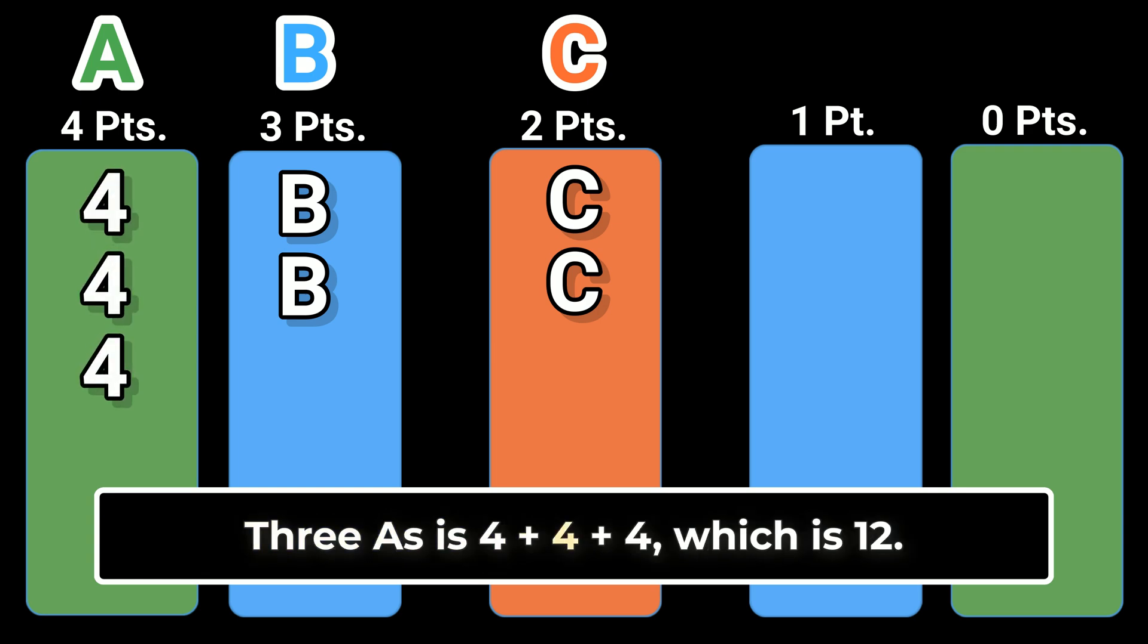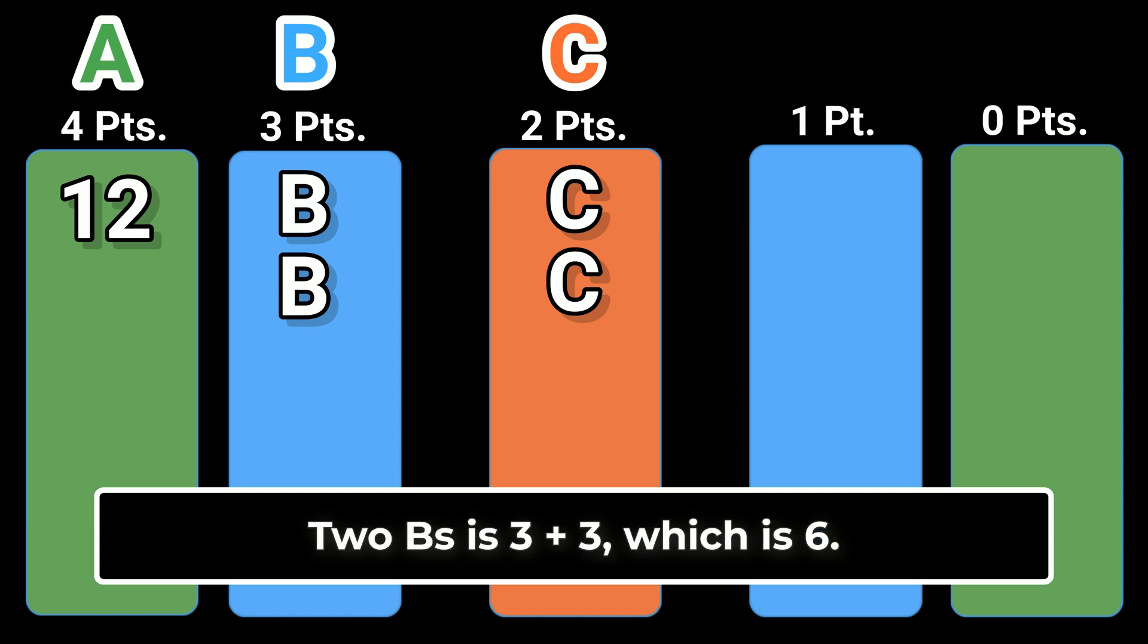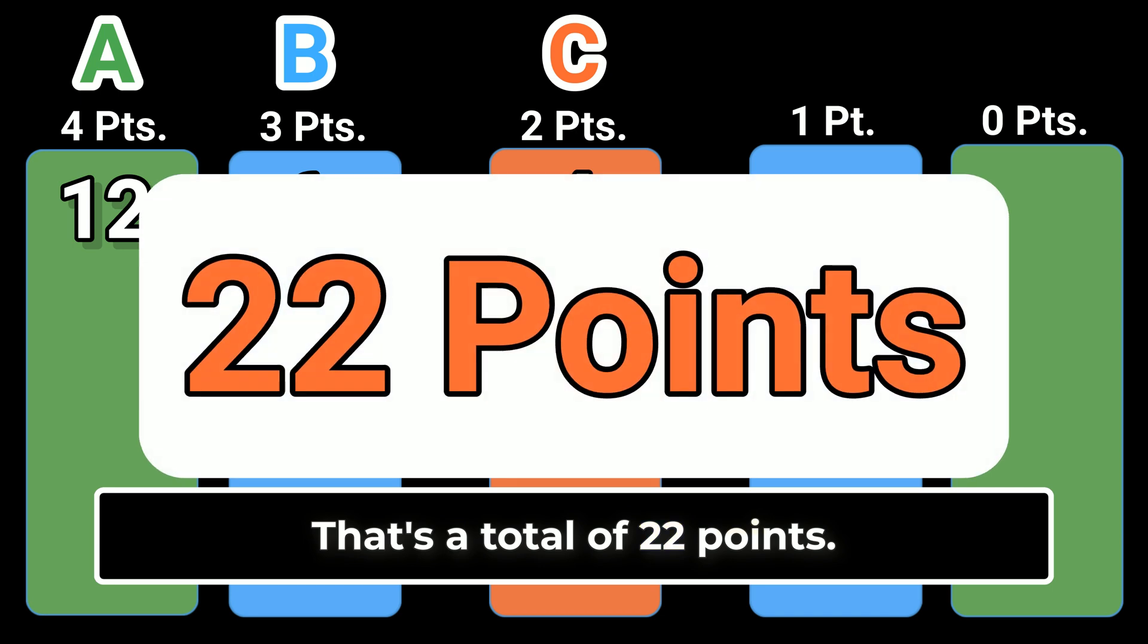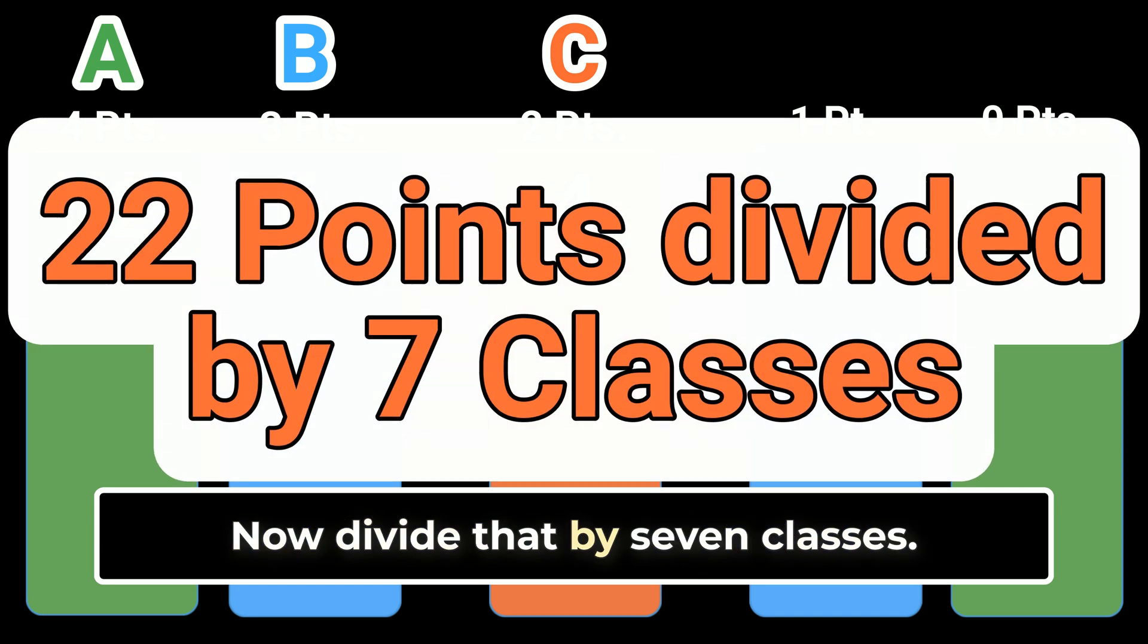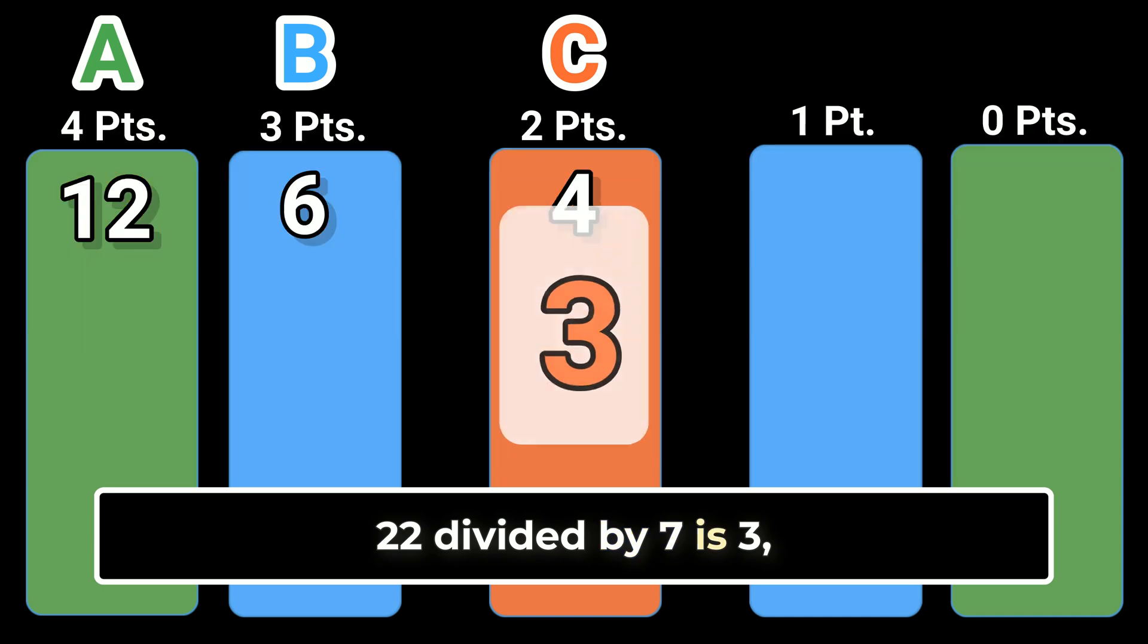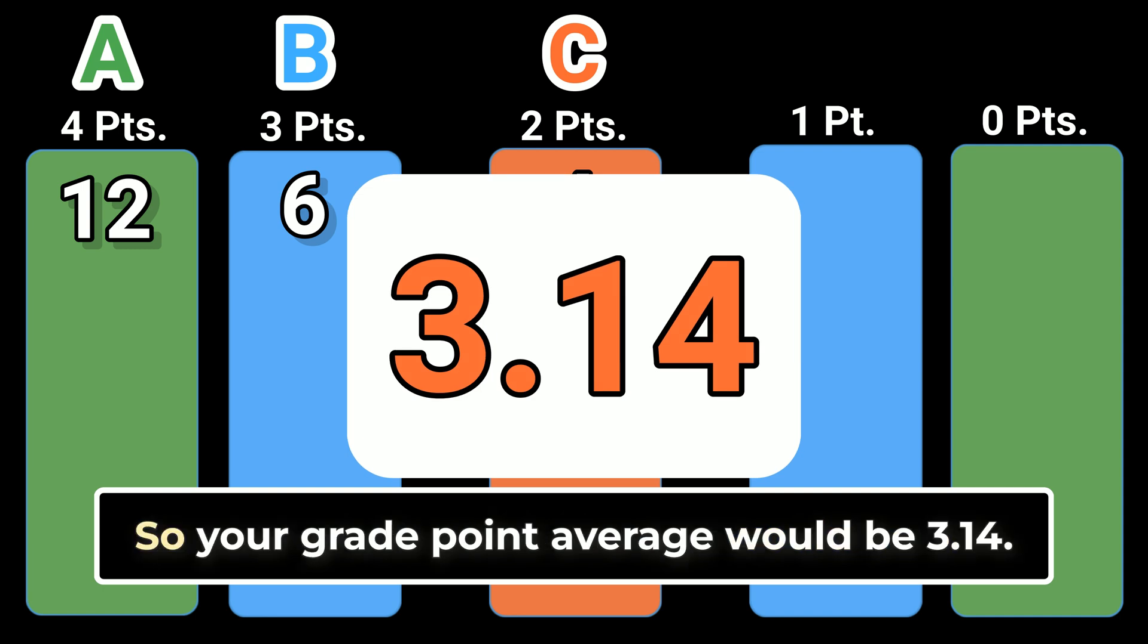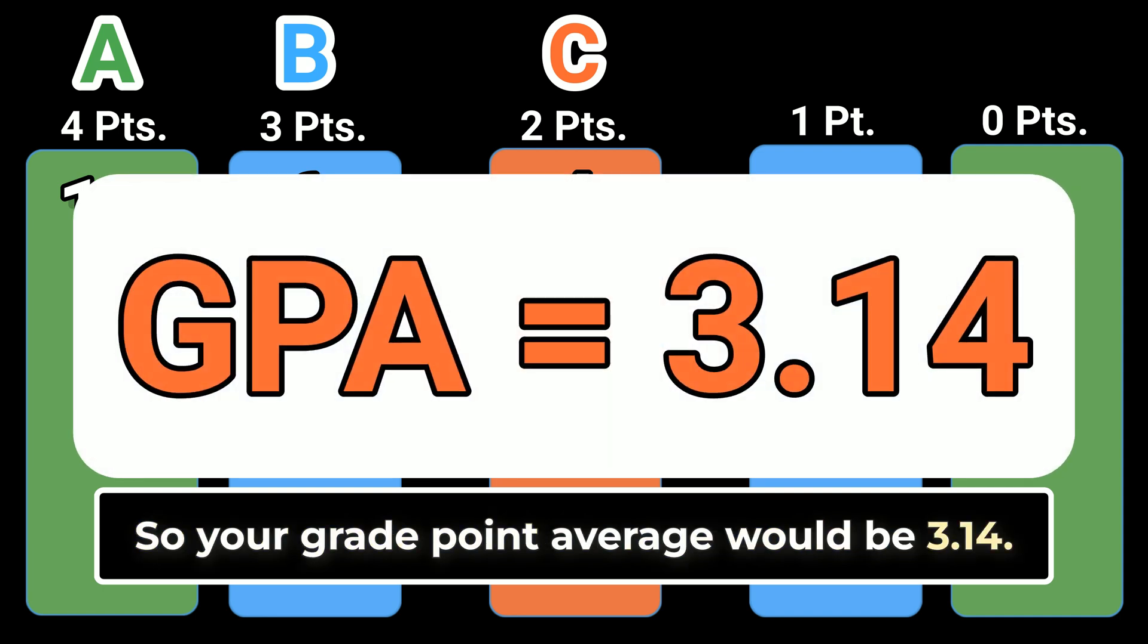Three A's is four plus four plus four, which is 12. Two B's is three plus three, which is six. And two C's is two plus two, which is four. That's a total of 22 points. Now divide that by seven classes. 22 divided by seven is three with a remainder of one seventh, or 3.14. So your grade point average would be 3.14.